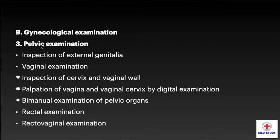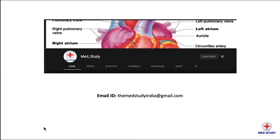Now coming to the last point in gynecological examination: pelvic examination. It includes inspection of external genitalia, vaginal examination which includes inspection of the cervix and vaginal wall, palpation of the vagina and vaginal cervix by digital examination, and bimanual examination of pelvic organs. Then comes rectal examination and recto-vaginal examination. This concludes gynecological history and clinical examination.